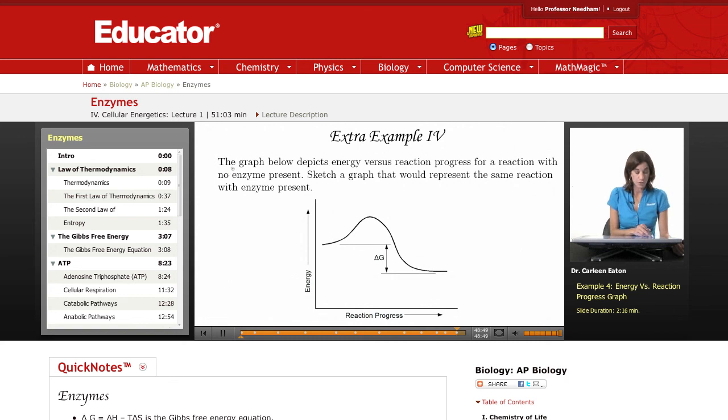Example 4, the graph below depicts energy versus reaction progress for a reaction with no enzyme present. Sketch a graph that would represent the same reaction with enzyme present.